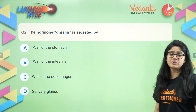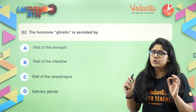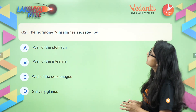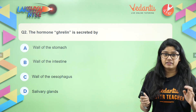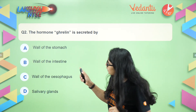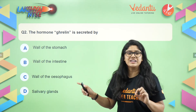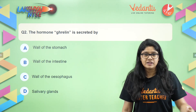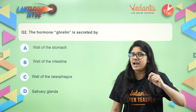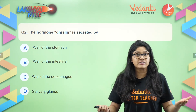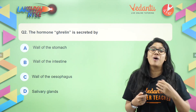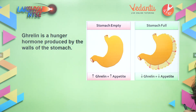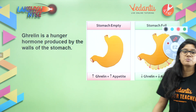Question number two. This hormone — you may or may not have heard about it. The hormone ghrelin is secreted by: walls of the stomach, walls of the intestine, walls of the esophagus, or the salivary glands? Please write your answer in the chat. The right answer — let's discuss this because it's a somewhat unfamiliar question.